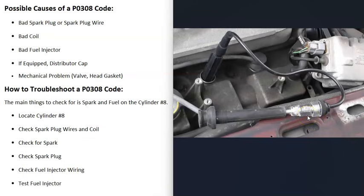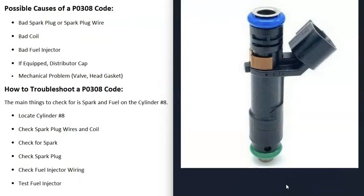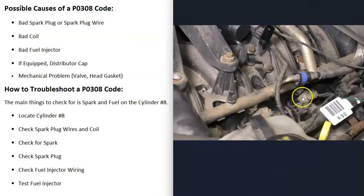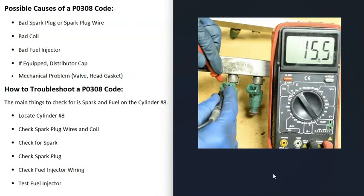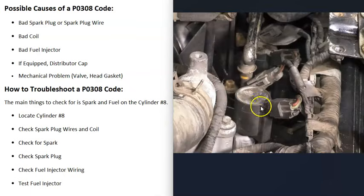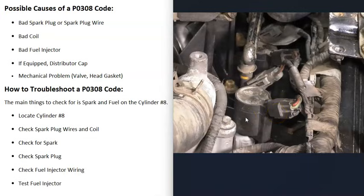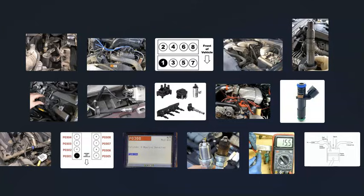Make sure you're getting spark to cylinder 8. If you are, the next thing to check is the fuel injector on cylinder 8. Sometimes injectors are easy to access and you can swap with another cylinder to see if the problem follows. If they're hard to reach, you can test them with a multimeter — there are good YouTube videos on how to do this. Also keep in mind that any wiring issue going to the fuel injector, like an open circuit, a short, or a bad connection, will cause the same symptoms as a bad injector.